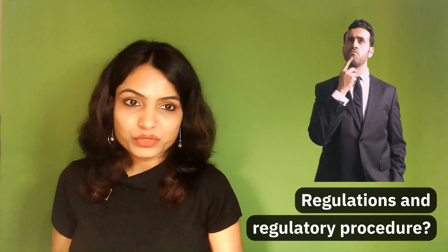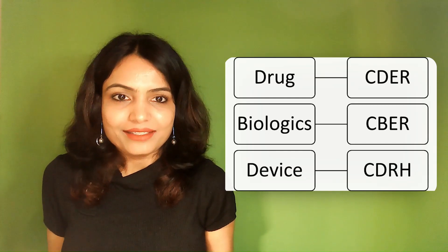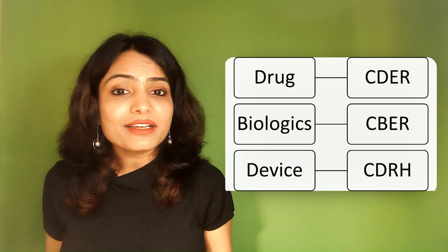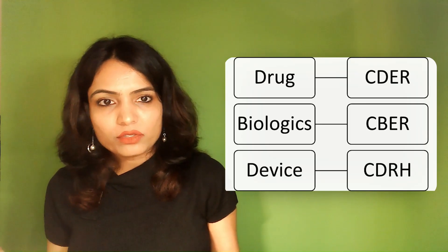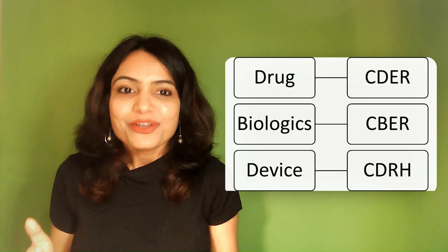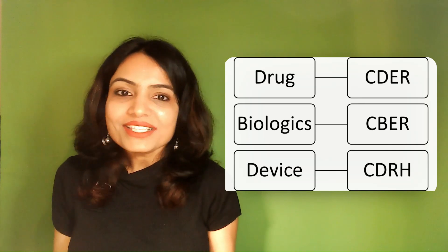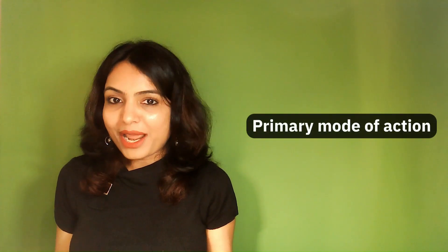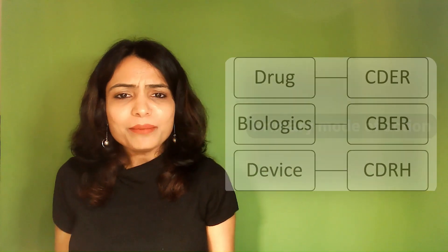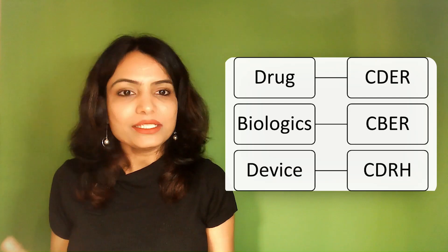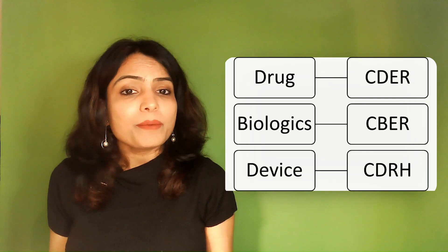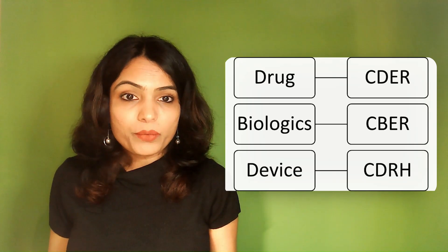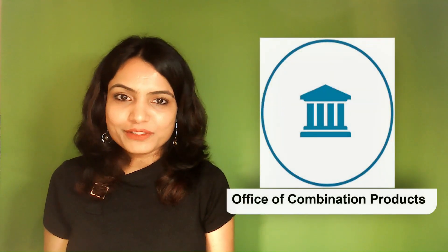Now let's look at regulations for combination products — how regulatory procedures work in the US and EU. In the US, drugs are reviewed by CDER, biologics are reviewed by CBER, and devices are reviewed by CDRH. These are the different centers responsible for reviewing your product. For combination products, which are a mixture of these components, the reviewing center depends on the primary mode of action. If the primary mode of action is a drug, the lead reviewer center is CDER; if biologic, it's CBER; if device, it's CDRH.